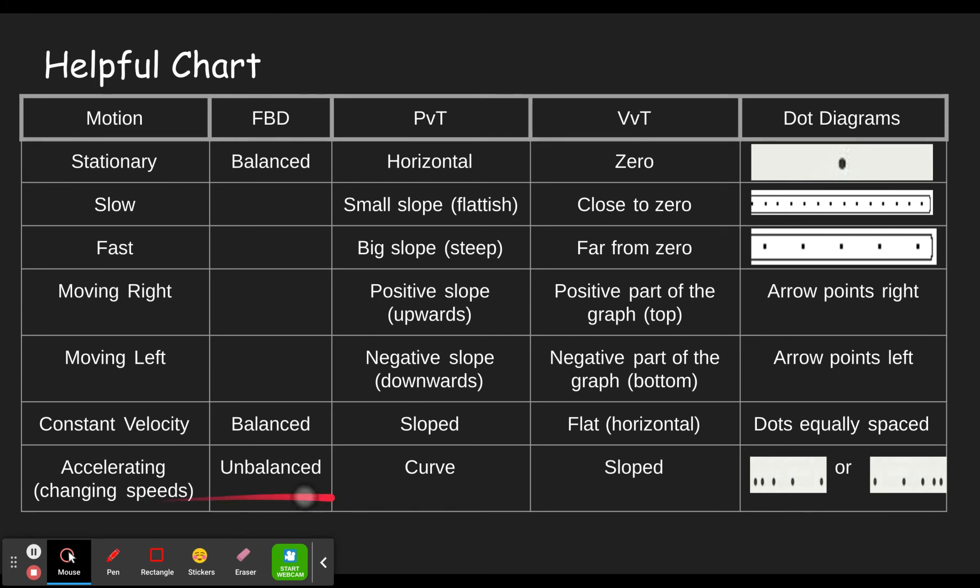I've included this chart. I'll bring it up again at the end that has most of the different things that you have here for something that's stationary, when it's slow, what it looks like when it's slow, what it looks like when it's fast. Notice I didn't put free body diagrams for that because free body diagrams only tell you if it's balanced or unbalanced.